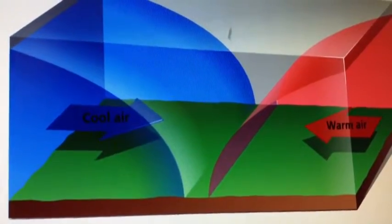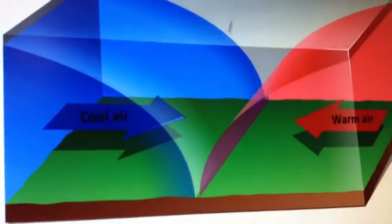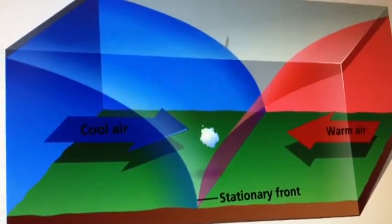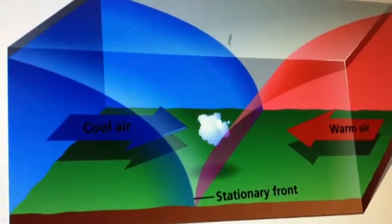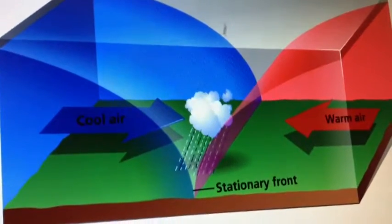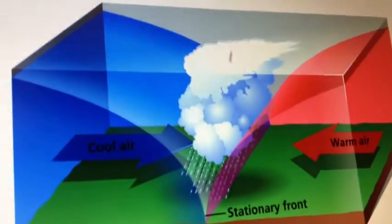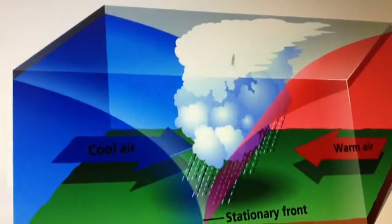Sometimes cold and warm air masses meet, but neither one has enough force to move the other. The two air masses face each other in a standoff. In this case, the front is called a stationary front. Where the warm and cool air meet, water vapor in the warm air condenses into rain, snow, fog, or clouds.